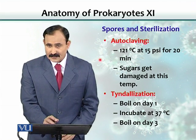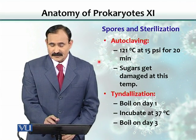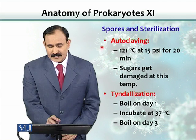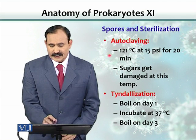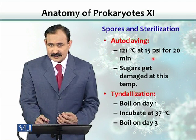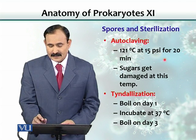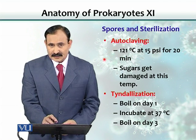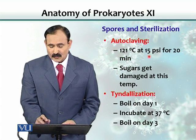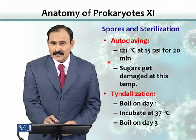Sterilization is also a problem with those bacteria that form endospores. There is a technique called autoclaving, where you increase heat and pressure by creating steam at 15 PSI. If these spores stay under these conditions for 20 minutes, the temperature achieved is 121 degrees Celsius, which is enough to kill those spores.